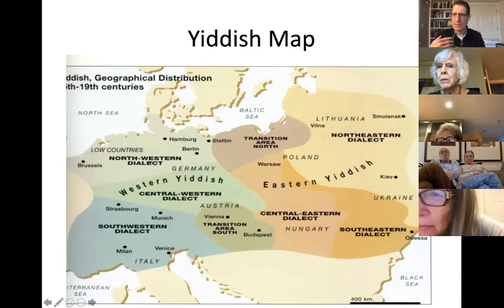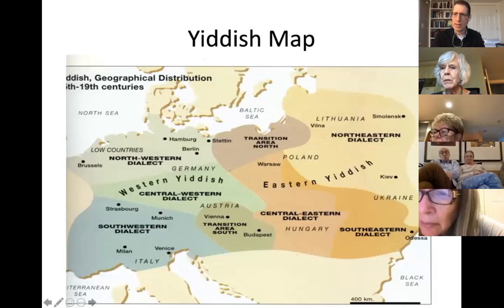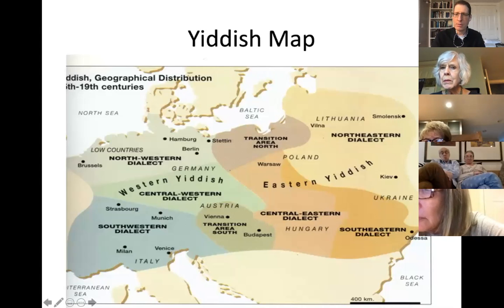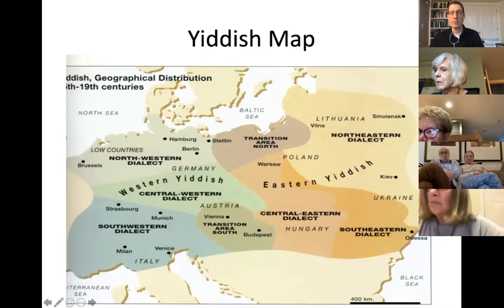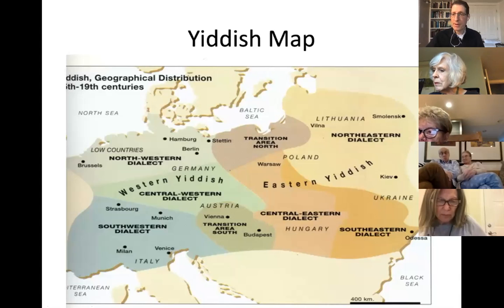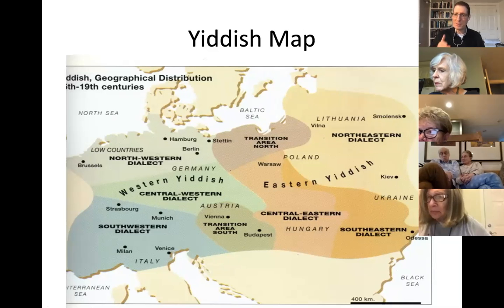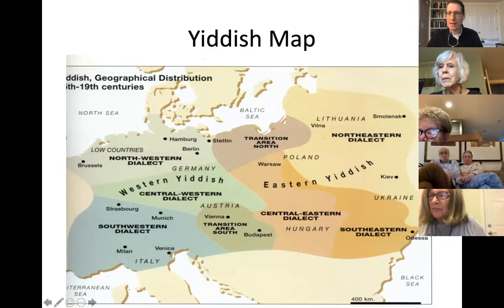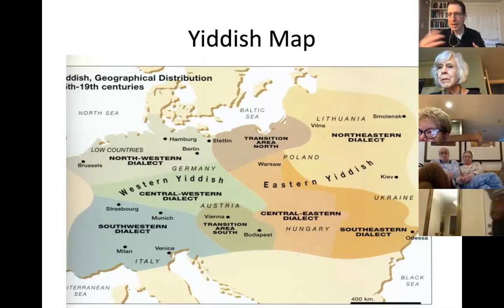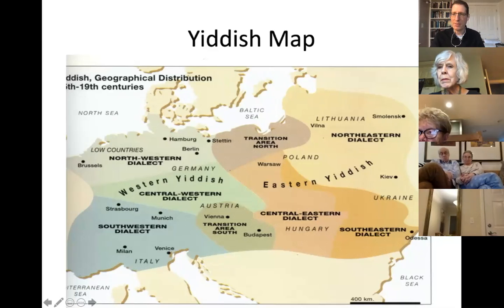One of the most famous distinctions in Yiddish are the Litvaks — the Lithuanian Jews — and the Galicianers, who represent the Southeastern dialect between Poland and Ukraine. You might have heard stories about how Litvaks were more meticulous and rule-oriented, as compared to Galicianers, who were more Southern Jews. Litvaks kind of looked down on them. Hasidism and mysticism were more widespread in the Southern Galicianer region than among the Litvaks.